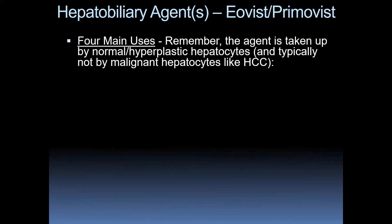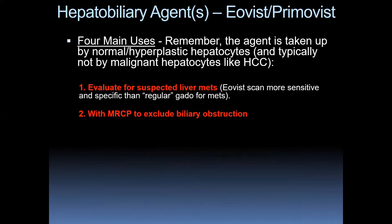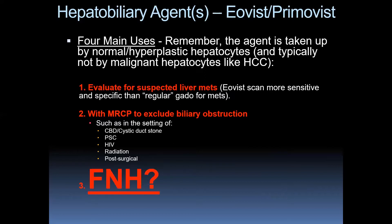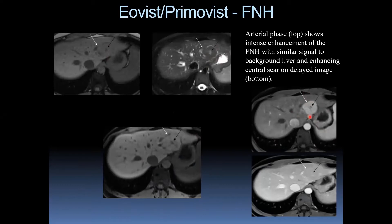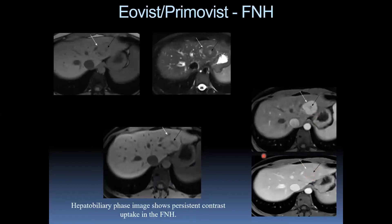The four main uses for hepatobiliary agents — remembering this agent is taken up by normal and hyperplastic hepatocytes, usually not by malignant hepatocytes like HCC: to evaluate for suspected liver mets; with MRCP to exclude biliary obstruction in settings such as common bile duct or cystic duct stone, primary sclerosing cholangitis, HIV, radiation, or post-surgical stricturing; to evaluate focal nodular hyperplasia; and to evaluate a real hepatic lesion versus a pseudolesion. Here is FNH with Eovist: heterogeneous iso-intense lesion on T1, T2 hyperintense with a hyperintense central scar, intense arterial enhancement. On the hepatobiliary phase: persistent contrast uptake in the FNH — very characteristic.